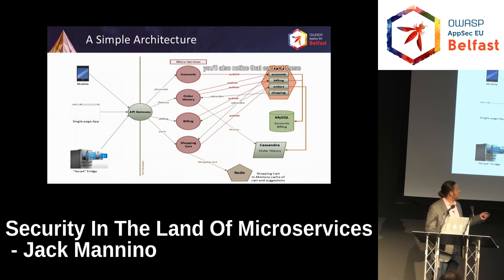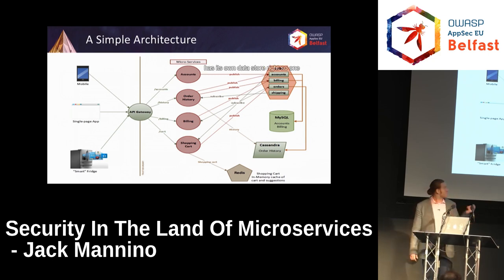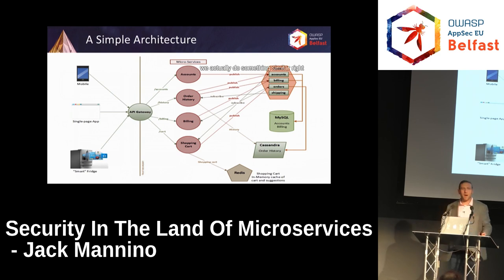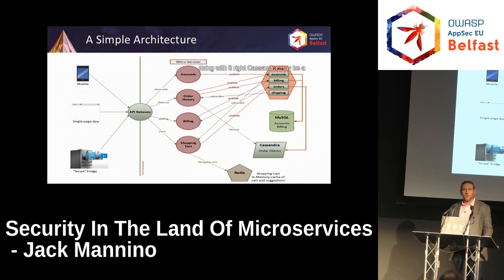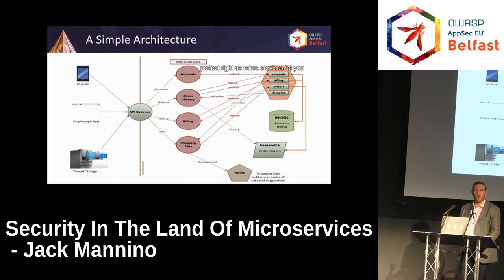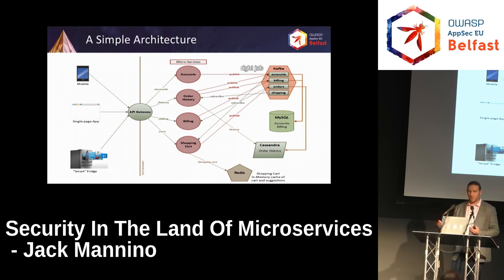Each of these services has its own data store. One service uses Cassandra; the shopping cart uses Redis. Depending on the data and what you're doing with it, Cassandra may be a really good fit — for services that are write-heavy, Cassandra's wide columns can actually be a benefit. Microservices let you pick essentially the right tool for the right job.